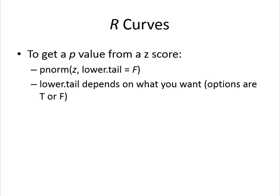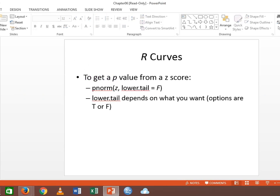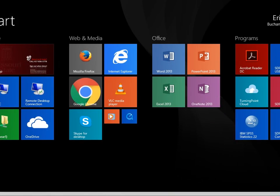So let's try getting p-values using pnorm in R. To get a p-value, you type pnorm. That stands for: I want a p-value out of a normal distribution. You type in the Z-score. Then there's the lower.tail argument.